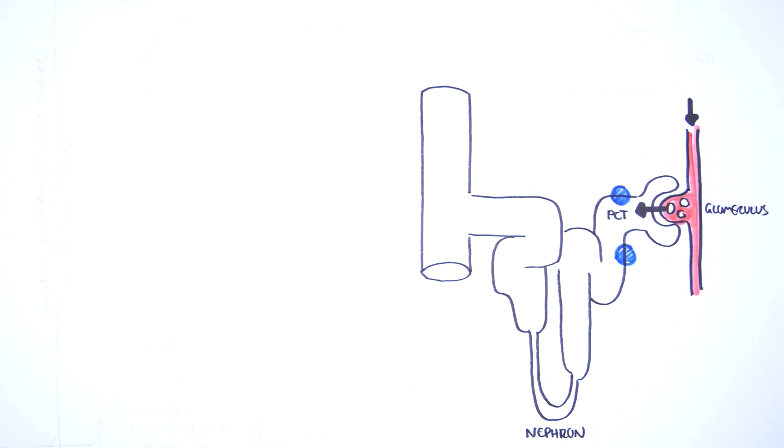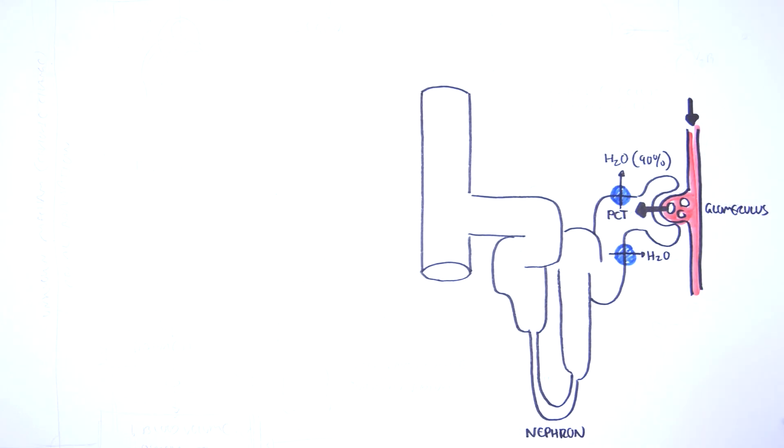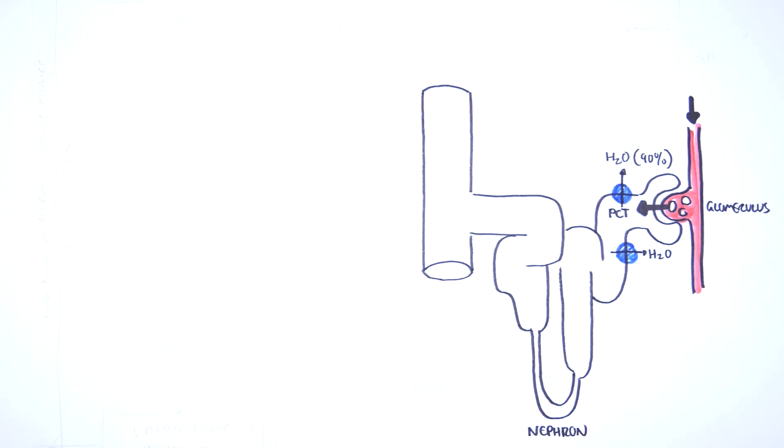The proximal convoluted tubule has channels on it called aquaporin 1 channels, which reabsorb water. The aquaporin 1 channels are responsible for reabsorbing 90% of water that is filtered through the nephron.